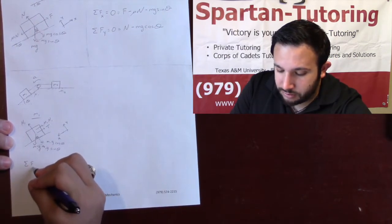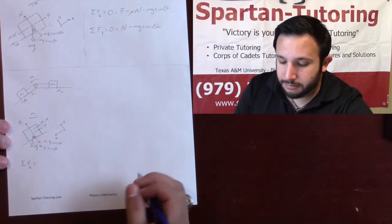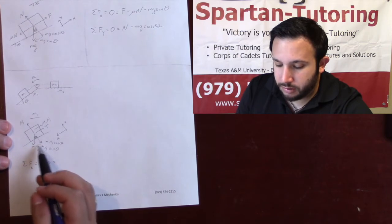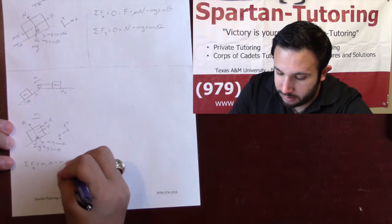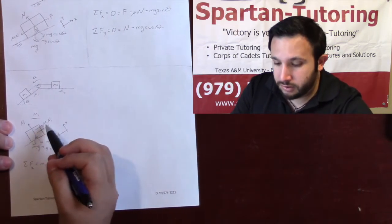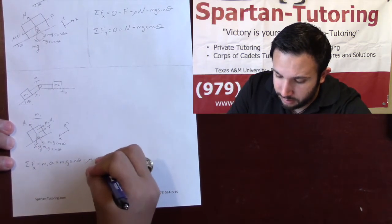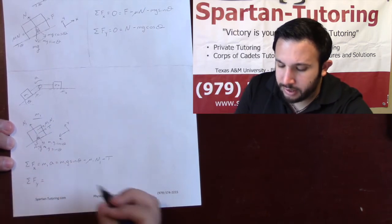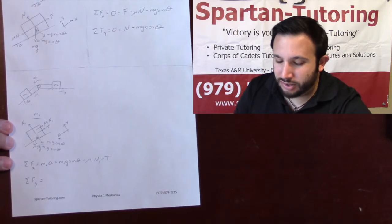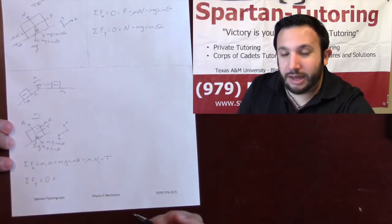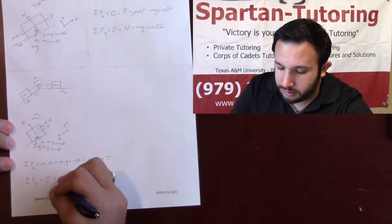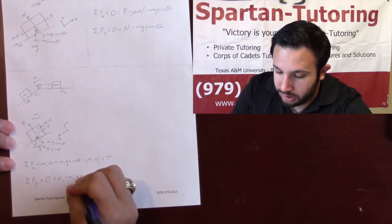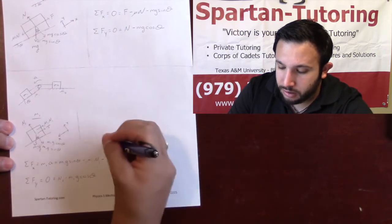Sum of forces in x for m1: I am accelerating, so it equals m1 times a. In the positive x-direction I have m1g sine theta. In the negative x-direction I have minus mu1 N1 and minus T. For sum of forces in y: not accelerating in y, so zero. N1 is positive y, and m1g cosine theta is in the negative y-direction, so minus m1g cosine theta.